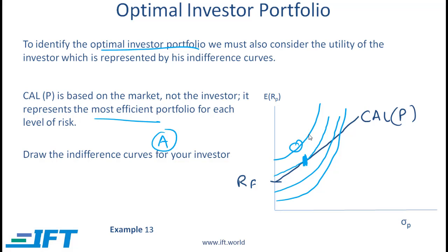There are indifference curves that would make the investor even happier, but these curves do not touch the capital allocation line — the market does not offer portfolios that give you that level of return at a particular level of risk. The capital allocation line tells us what's possible given the market; the indifference curves tell us what makes the investor happier. We need to connect the two to come up with something practical that makes the investor as happy as possible.